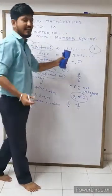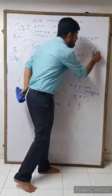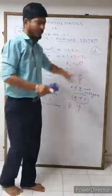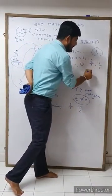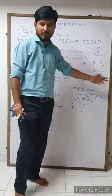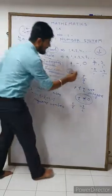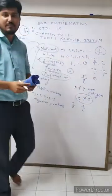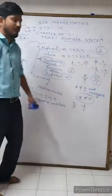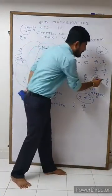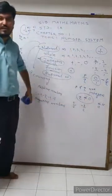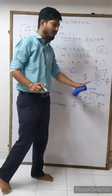Is the number one a rational number? Yes, because we can write it as one by one. When no denominator is given, we can write the denominator as one. For example: two is two by one, three is three by one, minus five is minus five by one — any integer can be written in p by q form. Is zero a rational number? Yes, because zero can be written as zero by one, where p equals zero and q equals one. We cannot write zero as zero by zero — that is not possible.